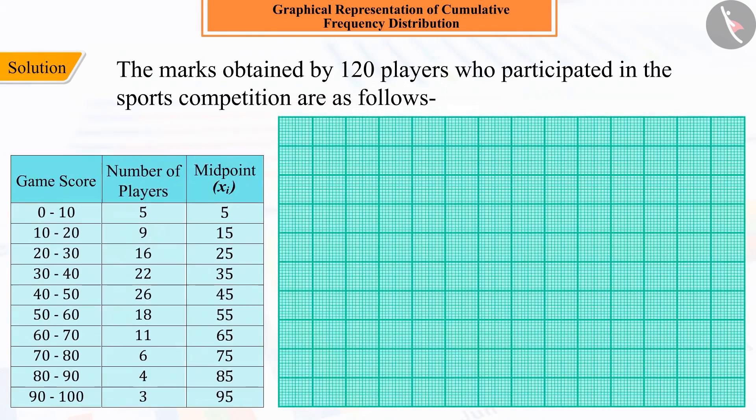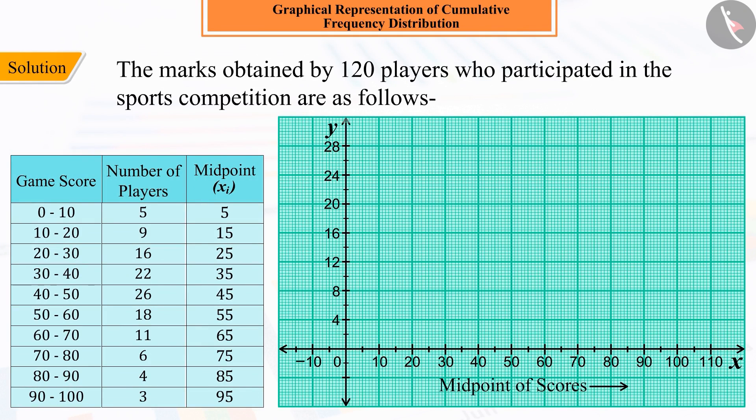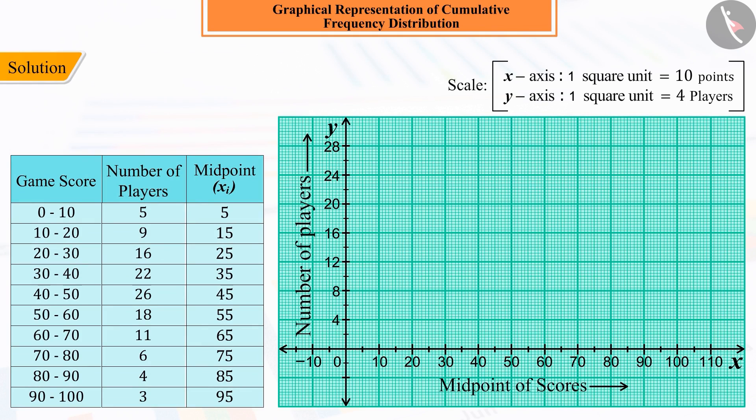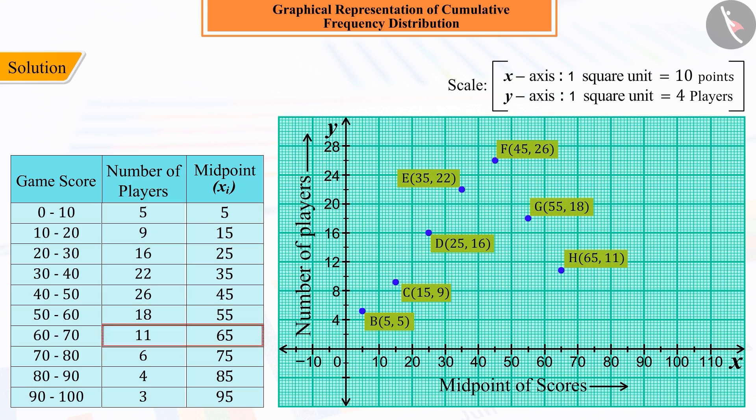Now, plot the midpoint on the x-axis and the frequencies on the y-axis. Plot the corresponding points B, C, D, E, F, G, H, I, J and K of the ordered pairs obtained from the above frequency distribution. But keep in mind that point A represents zero frequency.